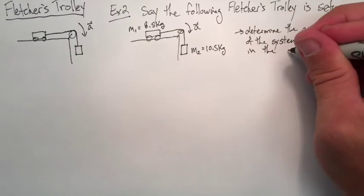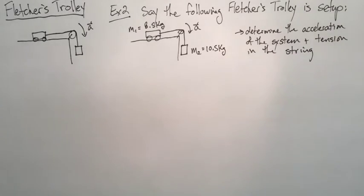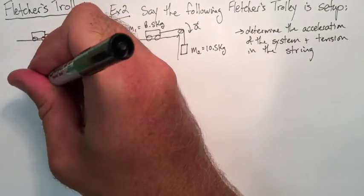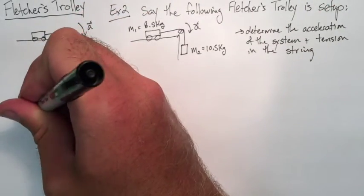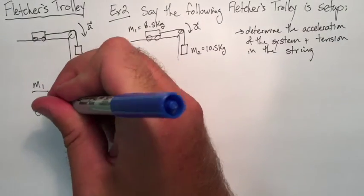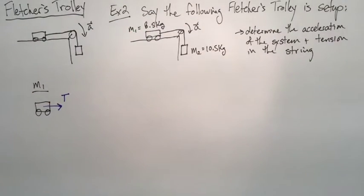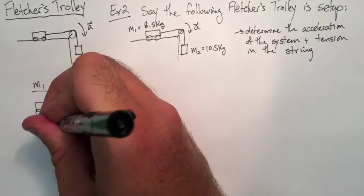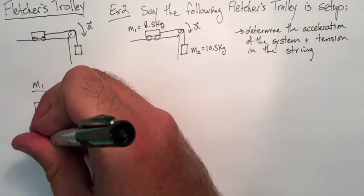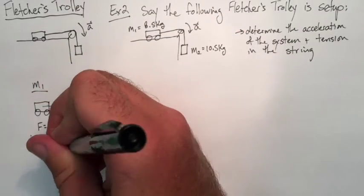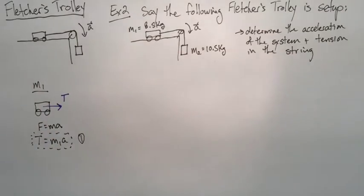We're going to do it almost in the exact same fashion as an Atwood's machine. We want to look at each of the objects, make an equation, and then solve for the unknown. So here's M1. It has tension pulling forward. FG and normal force are going to cancel, so we're not going to worry about those. So F equals MA which is basically going to be T equals M1A.